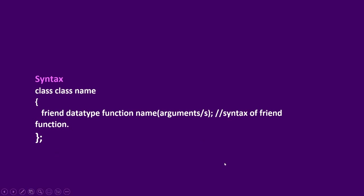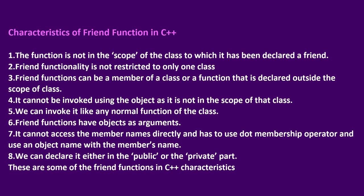The characteristics of a friend function in C++ are as follows: The function is not in the scope of the class which has been declared a friend. Friend functionality is not restricted to only one class. Friend functions can be a member of a class or a function declared outside the scope of a class. It cannot be invoked using the object as it is not in the scope of the class. We can invoke it like any normal function. Friend functions have an object as an argument. It cannot access member names directly and must use the dot membership operator with the object name. We can declare it either in the public or private part.